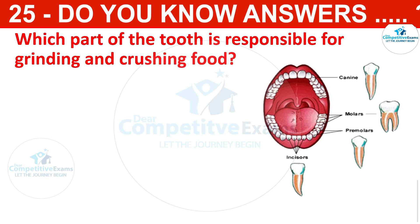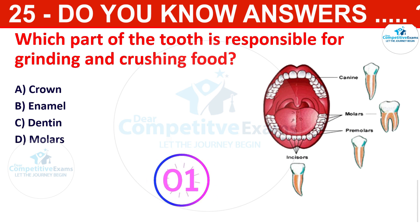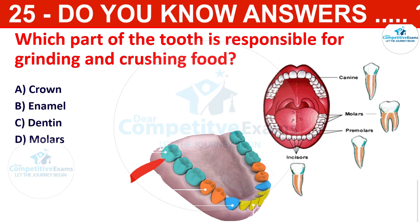Which part of the tooth is responsible for grinding and crushing food? The options are crown, enamel, dentine, or molars. The correct answer is molars. The molars are the flat teeth at the back of the mouth responsible for grinding and crushing food.